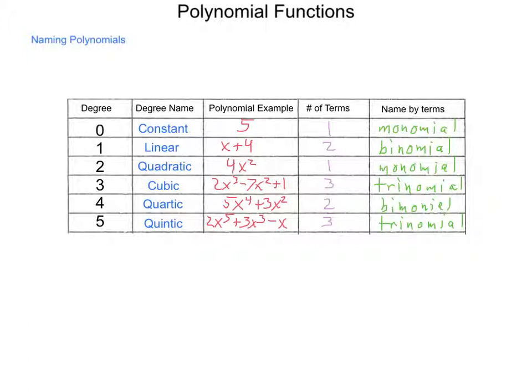When we name a polynomial, we do so by both degree and number of terms. So, our 2x³ - 7x² + 1, we would call a cubic trinomial. And x + 4 is simply a linear binomial. And we've worked with binomials in the past. So, let's see what we can do now, now that we're starting to work with higher order polynomials, as we work our way through in this unit here.